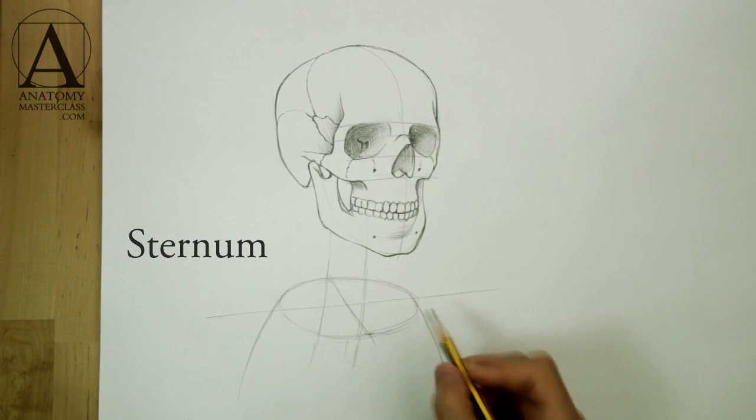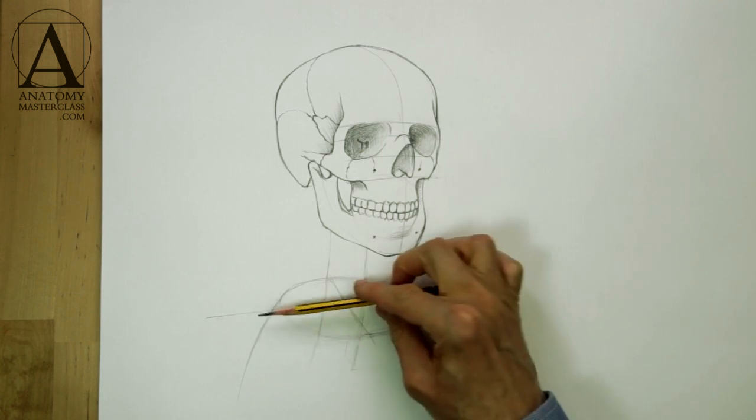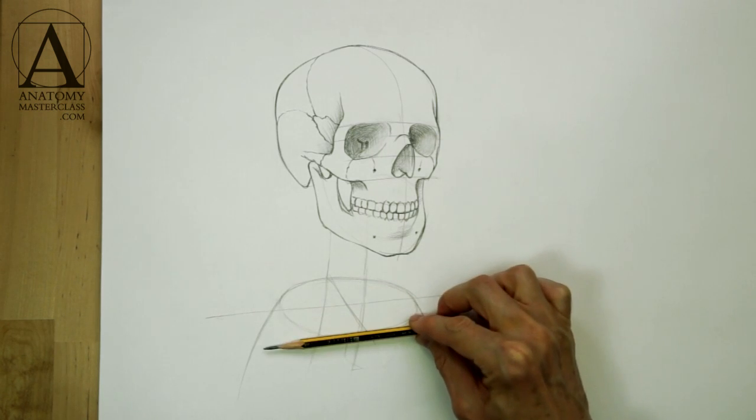The breastbone or sternum follows the same perspective as the shoulder axis. I easily measure this axis slope using a pencil.